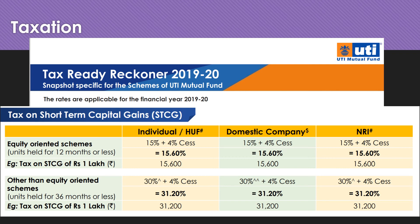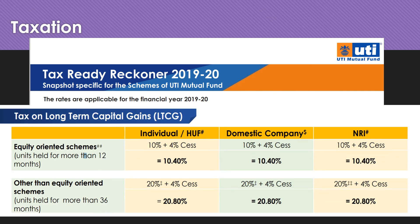When you sell a mutual fund at a higher price than you purchased, you have capital appreciation, and depending on how long you held the fund you pay either short-term or long-term capital gains tax. For equity-oriented schemes the short-term limit is 12 months, and for non-equity oriented schemes it is 36 months. If you sold an equity-oriented scheme within 12 months you pay 15.6%; if within 36 months for non-equity, you pay 31.20%. For long-term, equity schemes held over 12 months are taxed at 10.40%, and non-equity schemes held over 36 months are taxed at 20.80%.